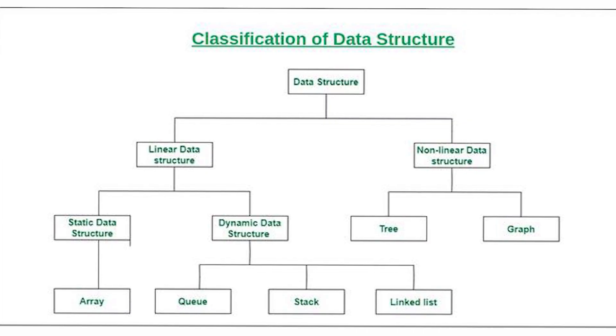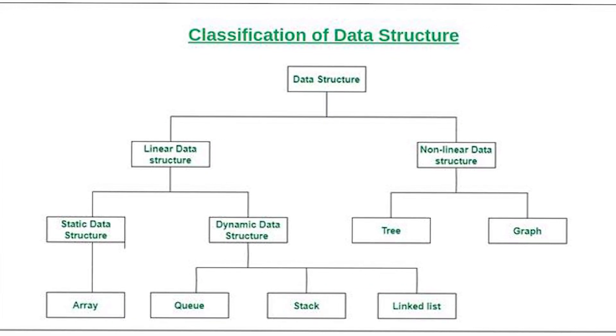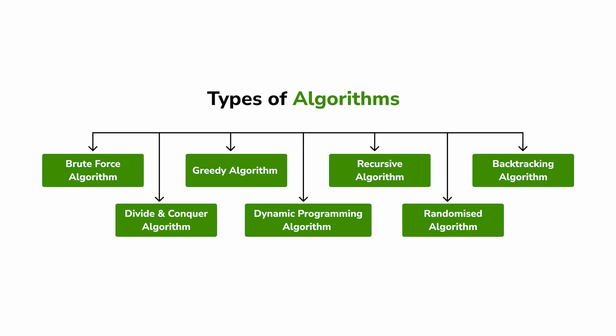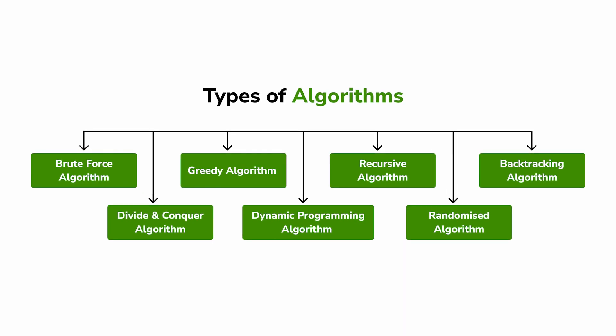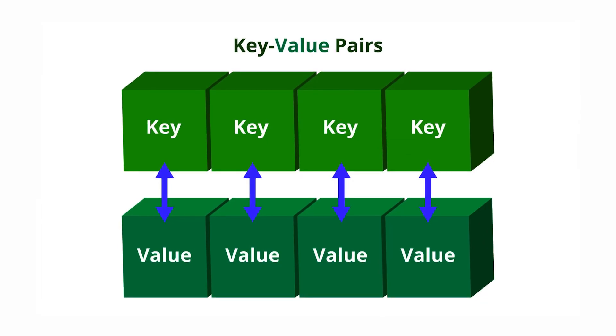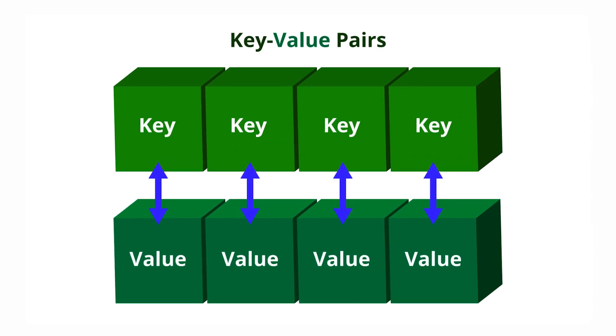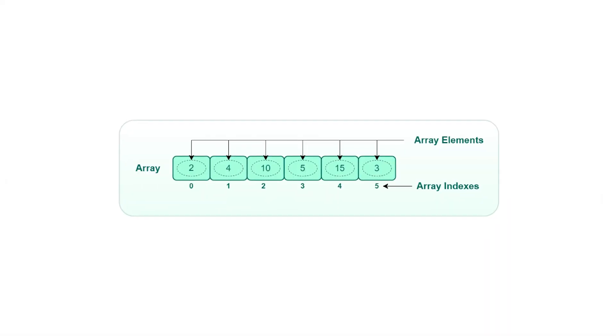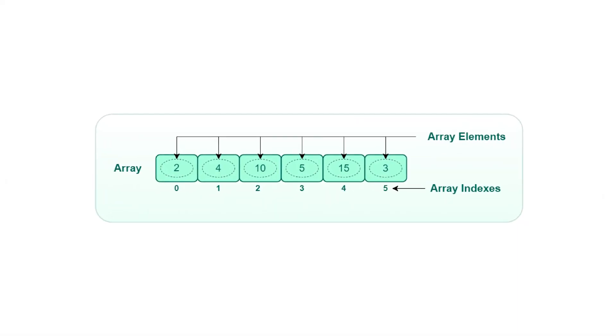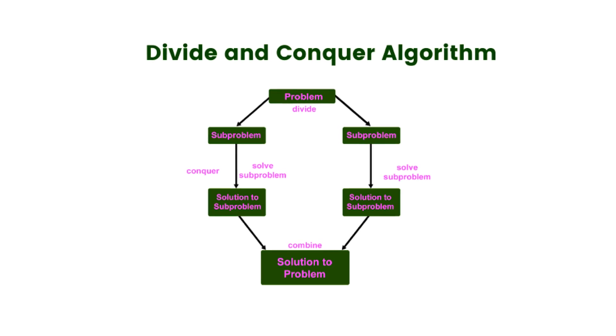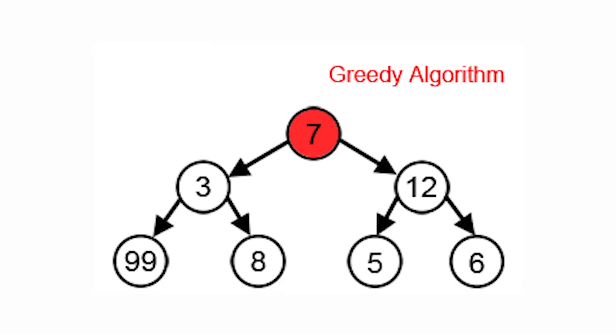In simple terms, data structures are methods of organizing and storing data, while algorithms are sets of rules that we perform on this data. You're going to learn about many types of them in these courses, ranging from hash maps and dictionaries to lists and arrays, and a bunch of algorithms like Divide and Conquer and Greedy Algorithms.